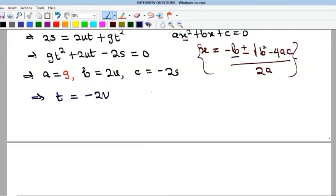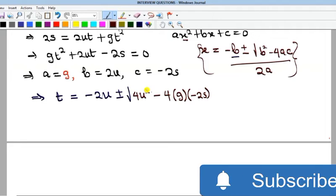And so I'm going to have negative 2u plus or minus the square root of, if you square negative 2u, you are going to get 4u squared. So here I'm going to have 4u squared, and that is going to be minus 4 into my a, which is g, multiplied by c, which is minus 2s.